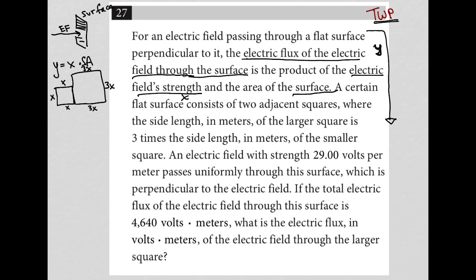Then it says an electric field with strength 29 volts per meter. So electric field strength, that's X, right? So this is saying if X is equal to 29. Oh, and I have this other X. Hmm. So maybe I should use a different variable. So let's call these A's. So I don't want to have any confusion. So let's say these are all side length A. And then these are side length 3A. So if X, again, the electric field strength. So if X is 29,